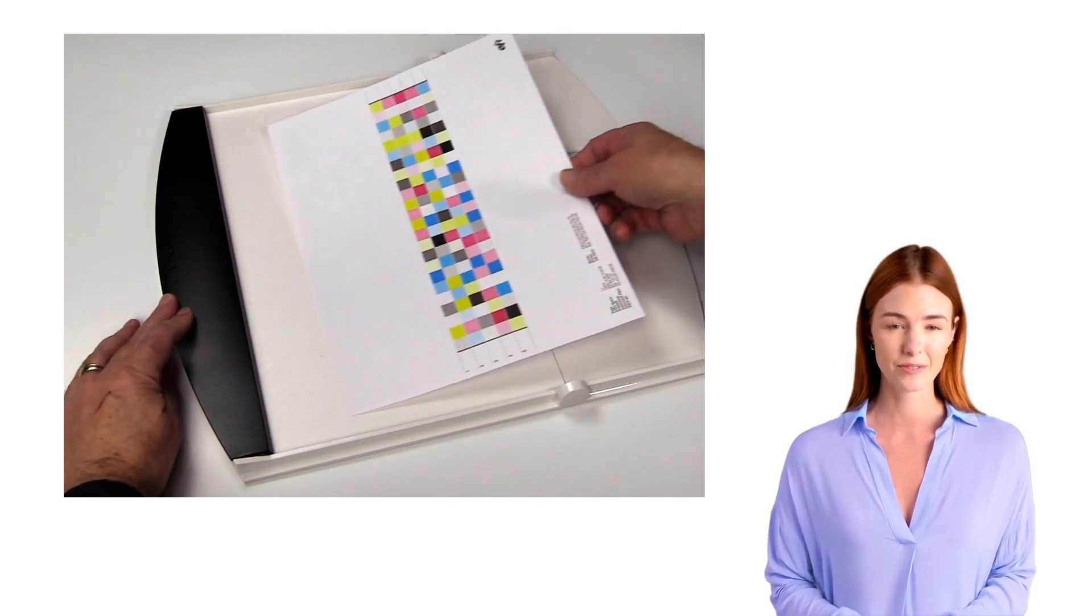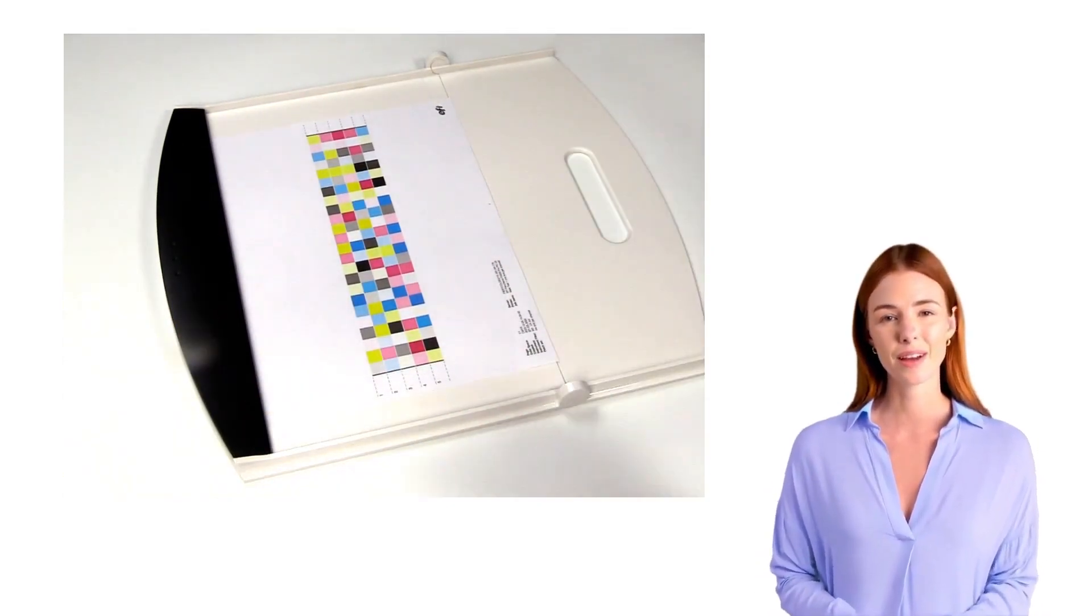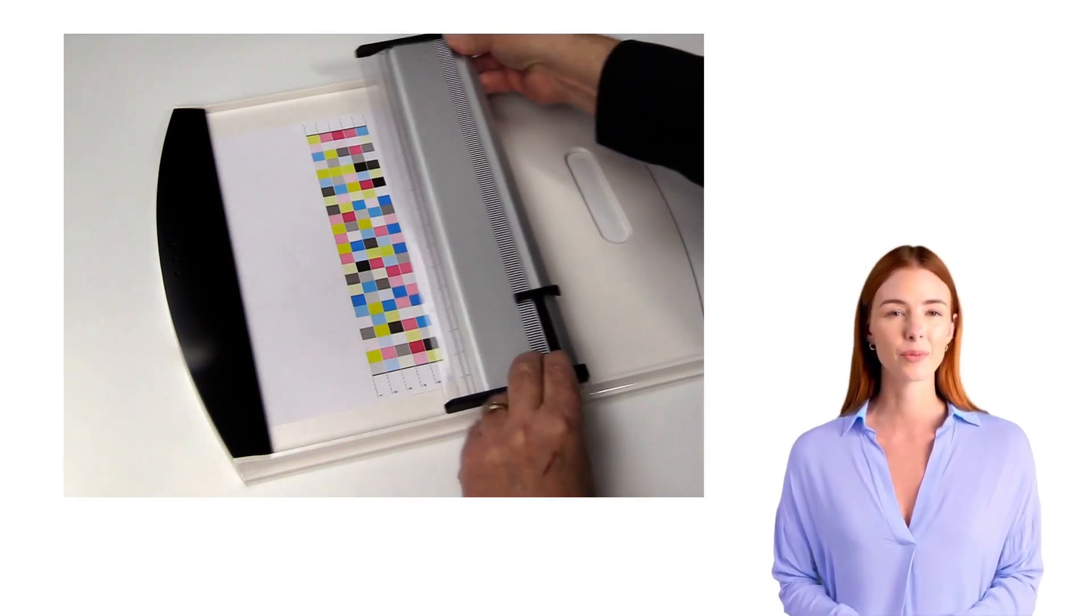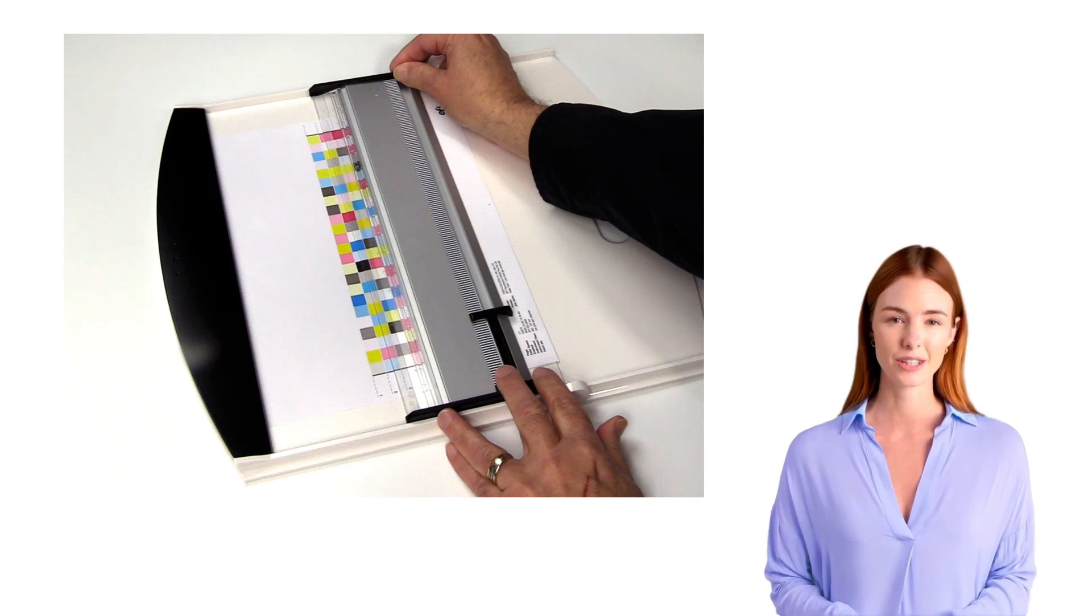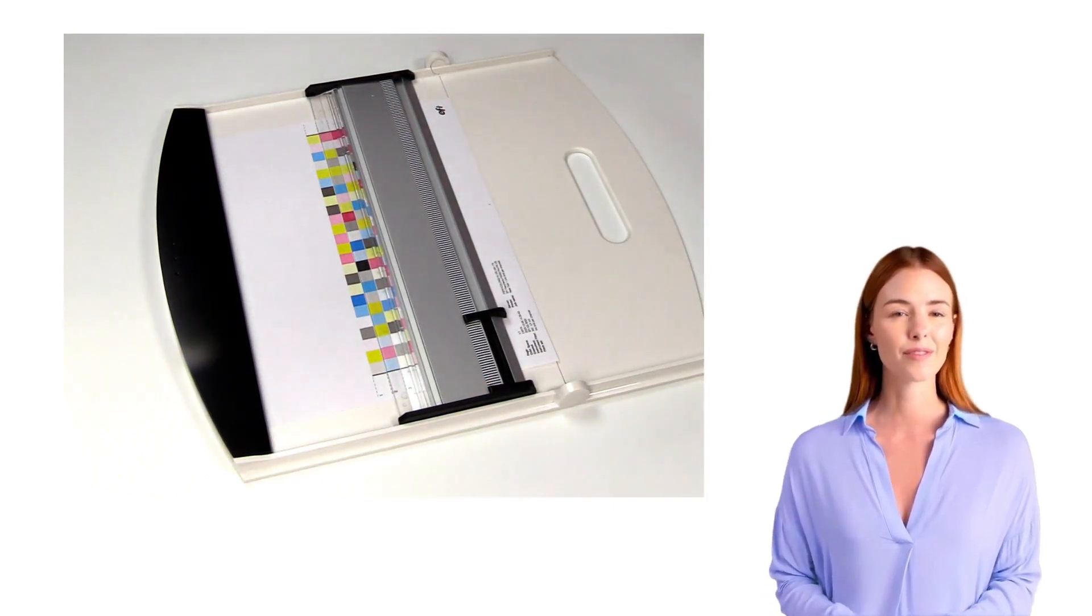Next, place the top edge of your printed chart under the clip at the top of the holder and center the printed area left to right in the middle of the holder. Then place the measuring ruler in the holder on top of the printed chart with the edge of the transparent strip positioned at the bottom of the first row to be measured.